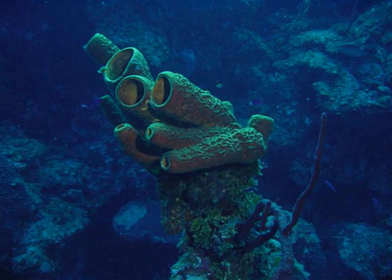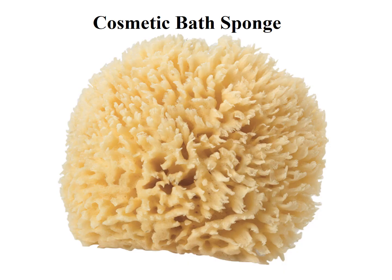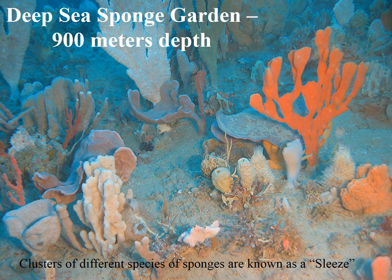And this is a tube sponge from the tropics, a New Zealand cancer-fighting sponge having some efficacy with the compound in there for fighting breast cancer, or at least being tested. This is a cosmetic bath sponge that people have been using for thousands of years, the squishy type. And when you get a cluster of sponges with lots of diversity, you call it a sleaze.